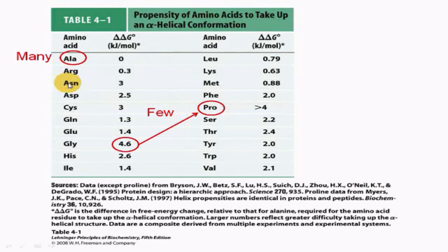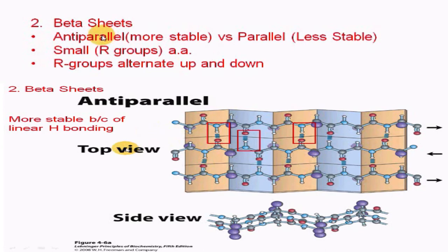Beta sheets are of two types: antiparallel and parallel. Antiparallel beta sheets are more stable because they have linear hydrogen bonds. The R groups of the amino acids in beta sheets alternate up and down, and the beta sheets consist of amino acids with small R groups.